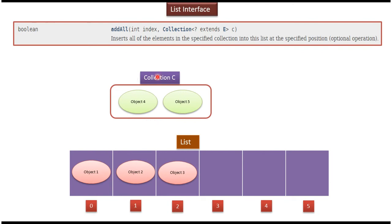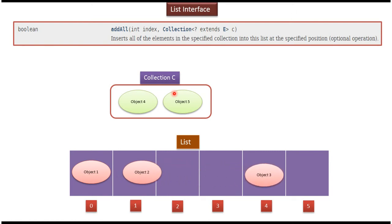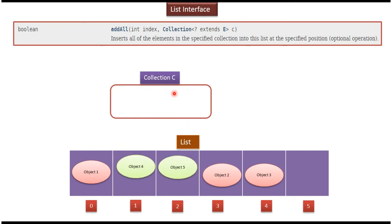Suppose I want to add a group of objects at a specified position in the list. Then I have to pass the collection to the addAll() method and specify the index. If I specify index as 1, then Object 2 and Object 3 will be shifted to the right, and Object 4 and Object 5 will be placed at the first and second index.